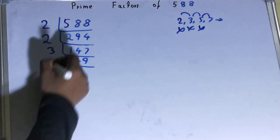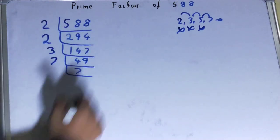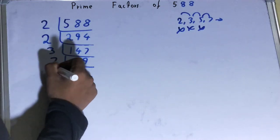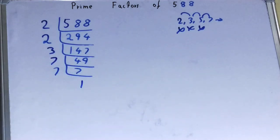49 is divisible by 7. So divide it. 7 times 7 is 49. And 7 is further divisible by 7. So divide it and you'll be left with 1.